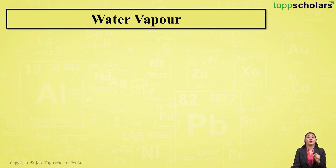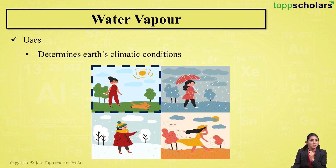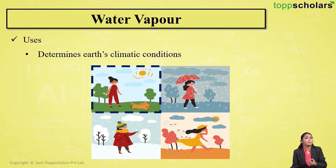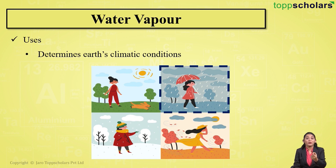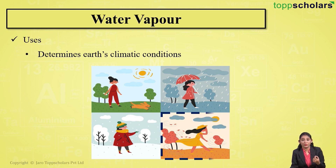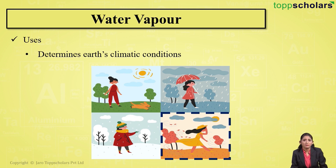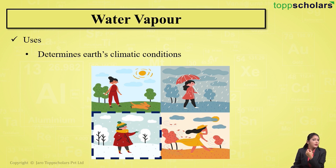Water vapor determines the earth's climatic conditions. In summer, the rate of evaporation is high, so the amount of water vapor in the atmosphere is more. In the rainy season, the rate of precipitation is more. A pleasant weather means the amount of water vapor in the atmosphere is balanced. In winter, the low temperature causes water vapor to freeze, giving us snow.